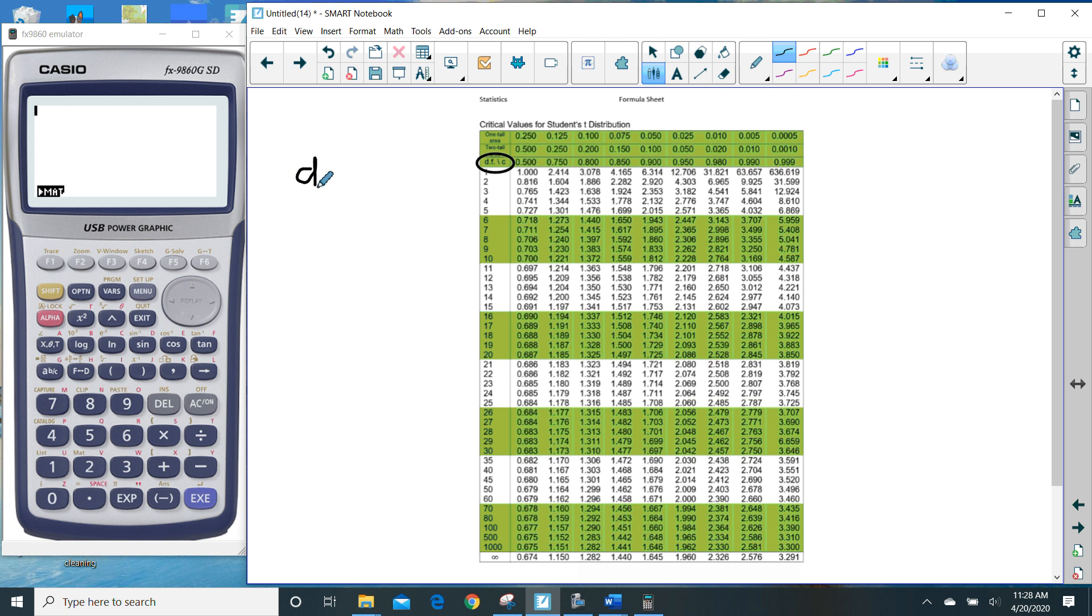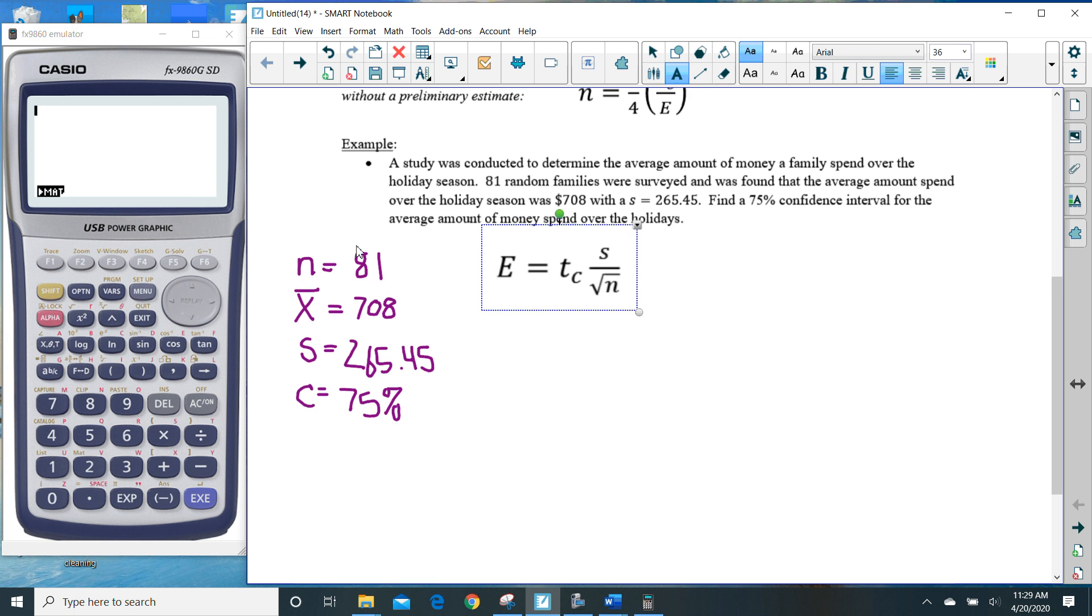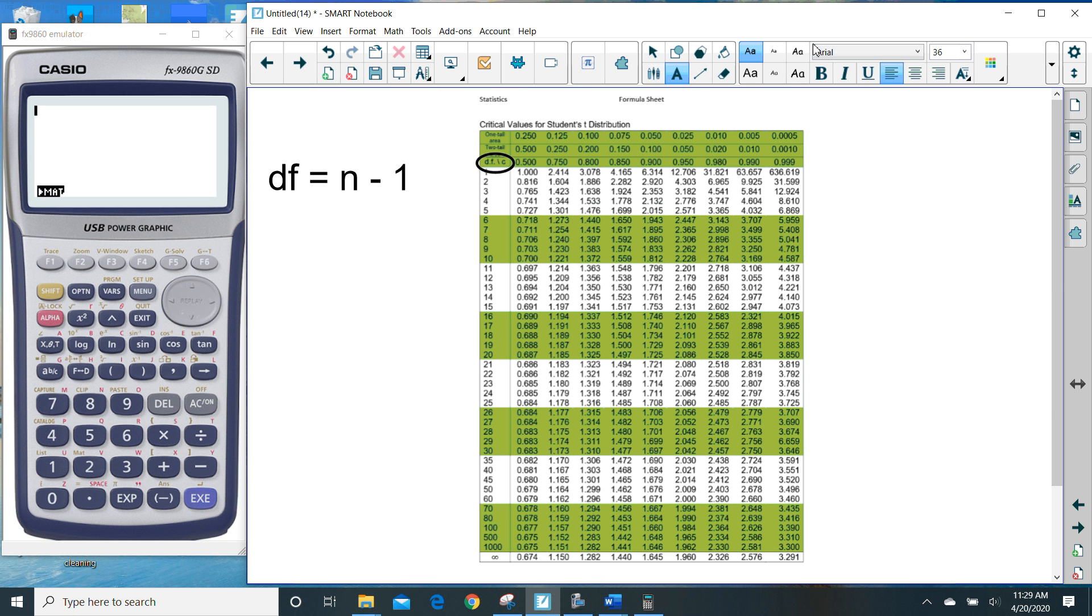So I'll write that down here. The degree of freedom is equal to n minus one. That's a lot more neat. So back to our page here, we see that our n in this sample is 81. So that would imply that the degree of freedom is 80. So the degree of freedom is 80 right there.